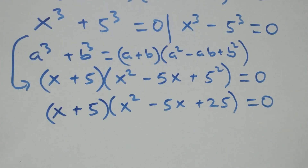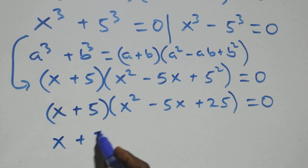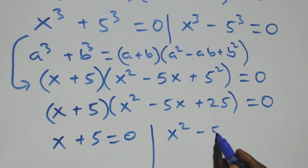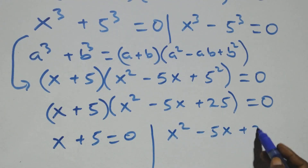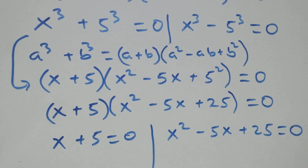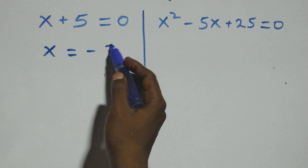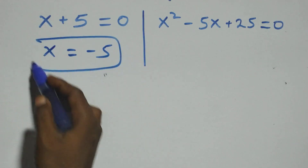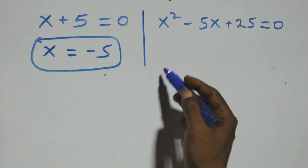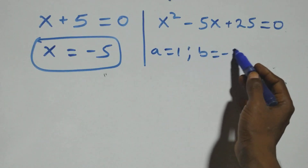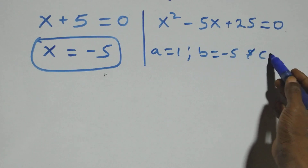So we have two possible cases: x plus 5 equals 0, or x squared minus 5x plus 25 equals 0. Solving the first, we get x equals minus 5, which is a real solution. On the other side, we have a quadratic equation where a equals 1, b equals minus 5, and c equals 25.